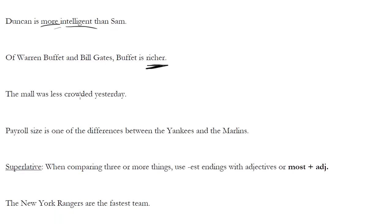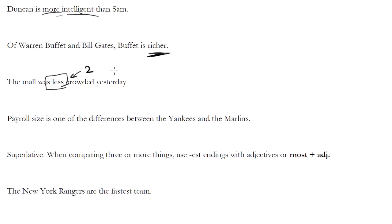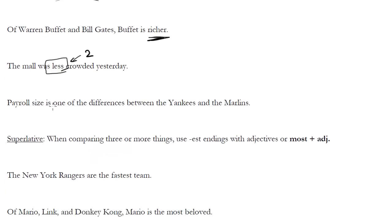The mall was less crowded yesterday — we use 'less' when comparing two things. We use 'fewer' when it's three or more. Payroll size is one of the differences between the Yankees and the Marlins. We're comparing two things, so we use 'between.' Whereas we use 'among' with three or more things. So that is your comparative.